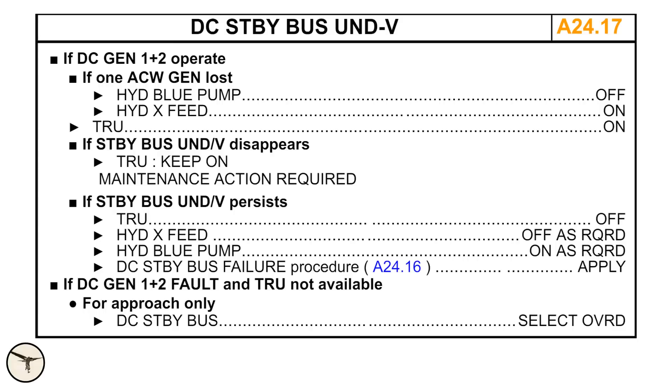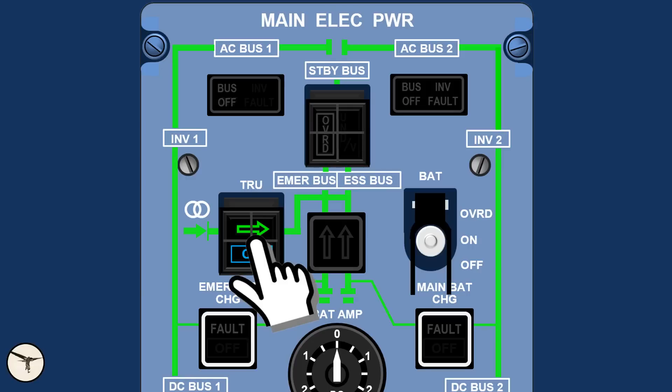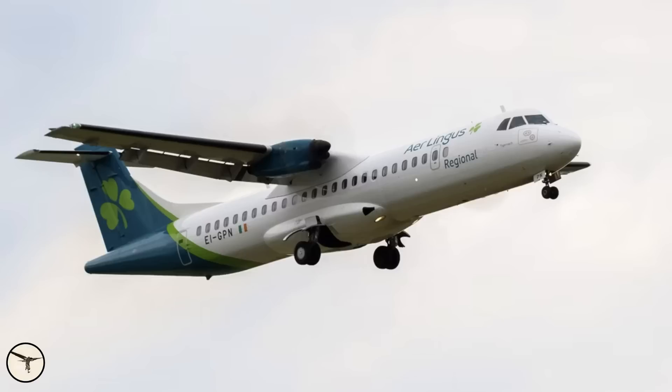And do you remember the checklist for standby bus under voltage? Apparently the captain did, and he instructed the first officer to select the TRU off. Immediately all systems returned back to normal. The flaps and the landing gear deployed, and when they were descending through 1000 feet, the aircraft was fully stabilized.